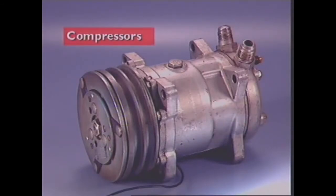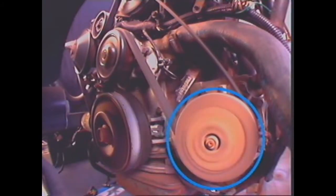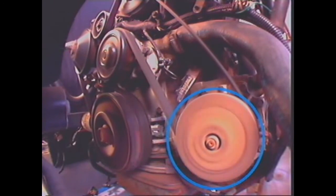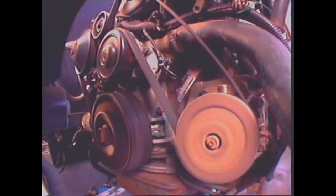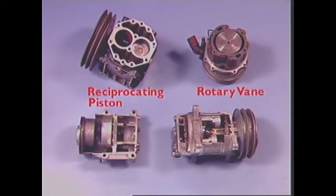This section examines air conditioning compressors. The air conditioning compressor circulates refrigerant through the system and is normally driven by a belt from the engine crankshaft. Four basic types are used: reciprocating piston, rotary vane, scroll, and axial piston.